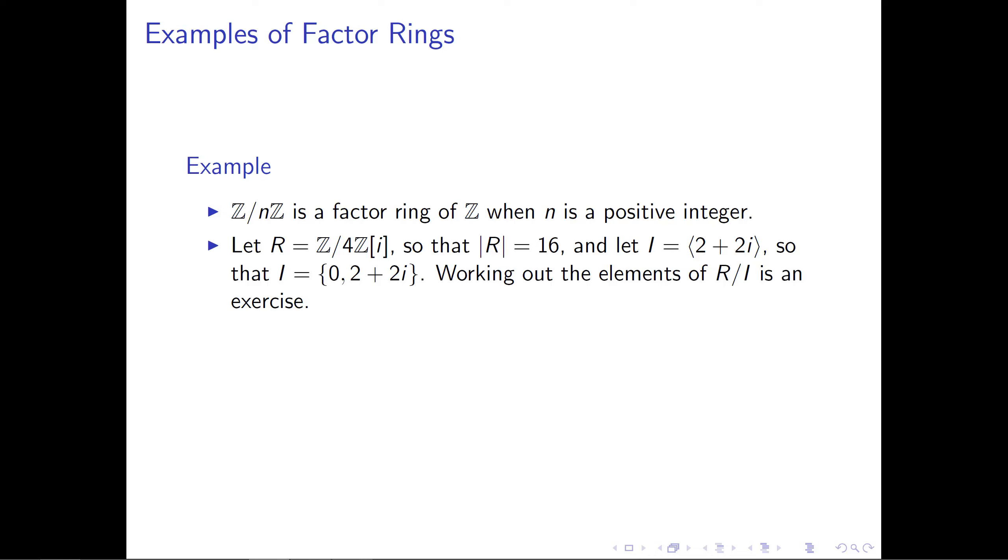Now, as an exercise, I'd like you to work out the elements of R mod I and figure out what they are. Since everything is finite here, this should be fairly straightforward. And I can tell you in advance that you should have eight different elements of your factor ring. And that just comes from group theory. The size of the ring is 16, the size of the subgroup is 2, and so you should have eight different elements, 16 divided by 2, in your factor ring.